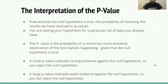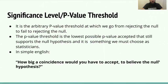A small p-value indicates strong evidence against the null hypothesis, so you reject the null. A large p-value indicates weak evidence against the null, so you fail to reject it. The significance level helps us decide what counts as small or large. It is the arbitrary p-value threshold at which we go from rejecting the null to failing to reject it — the lowest possible p-value accepted that still supports the null hypothesis, and it is something we must choose as statisticians.